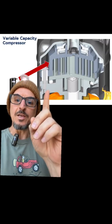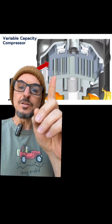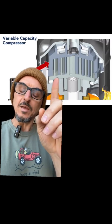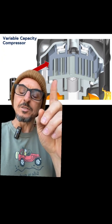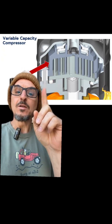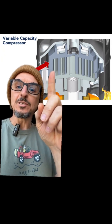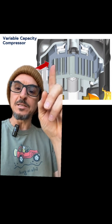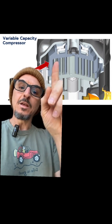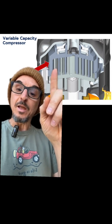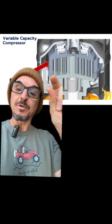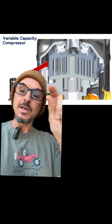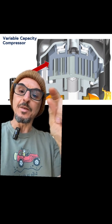Let's look inside. There's the inside of a digital scroll compressor — it looks the same as a scroll compressor. What happens when you want to reduce the capacity is the top plate is lifted from the bottom plate. And when they're separated by a very small amount, it doesn't do any work on the compressor.